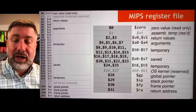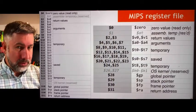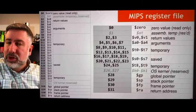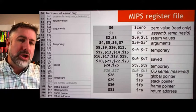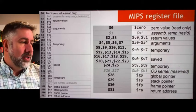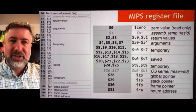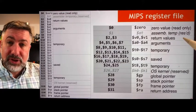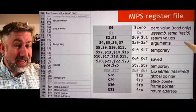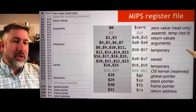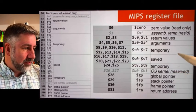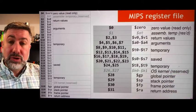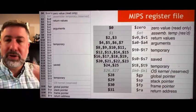Register one is a reserved register special for the assembler — the bit of code that converts assembly language into machine language. Some small translations during that process may need a temporary register, so register one is reserved for the assembler's use, called the assembler temporary or AT. Then we have two registers called V, primarily used as return values from procedures, four registers called A used as arguments to procedures, registers called temporary and saved, and some special-purpose pointer registers at the end used for procedure calls.